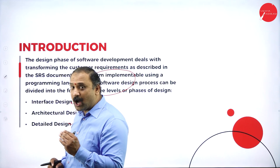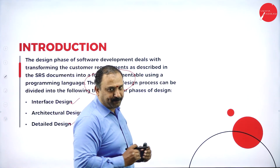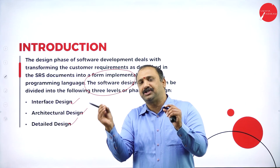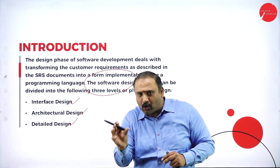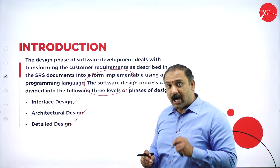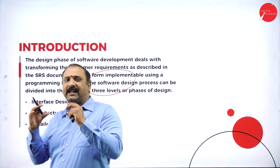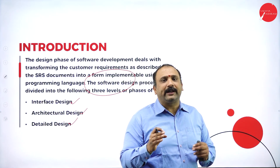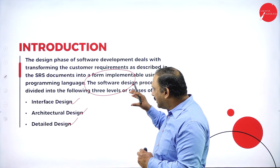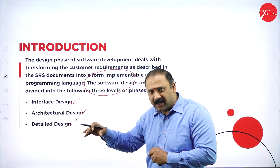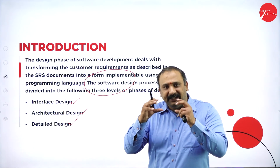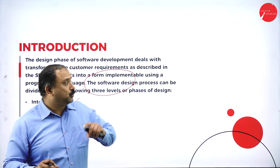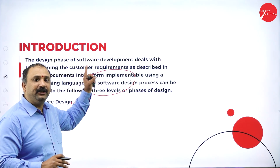Let's first try to understand how the design model actually emerges in a software process. The designing phase is where you translate a requirement into action. Till now, you were only reading through documents, understanding the requirements, how they fit in, and what technology capabilities are needed to make this software. But when it comes to design, you are putting words into action — using a programming language such as Java, .NET, or C++ — to translate those requirements into a live model.